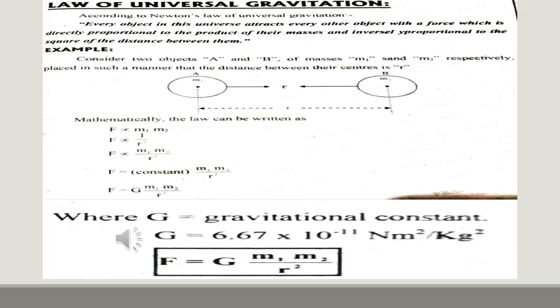The second relationship is that force of attraction is inversely proportional to the distance between their centers. Inversely proportional means that if the distance between the two objects increases, the force of attraction will decrease. So, if the distance between body A and B is increasing, then the force of attraction will be decreasing.